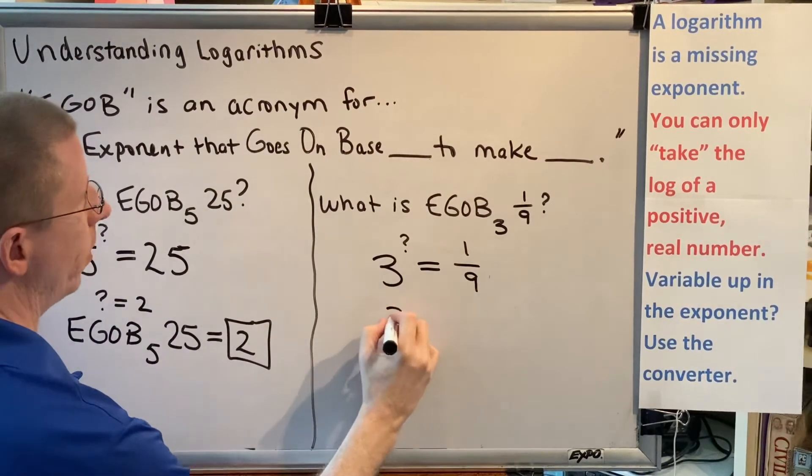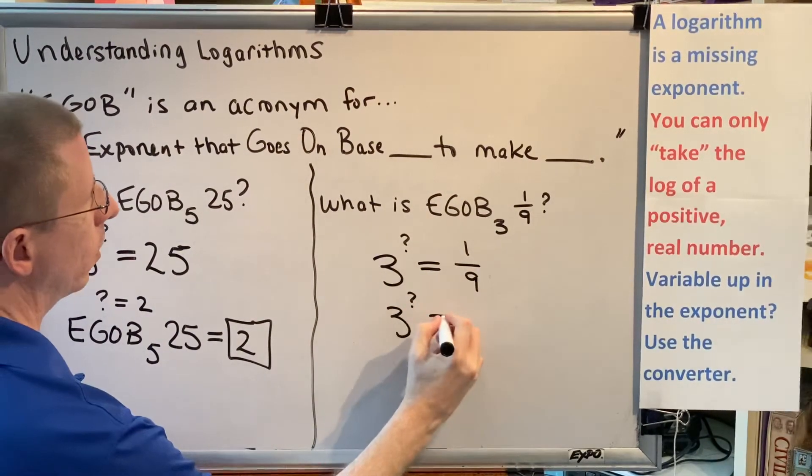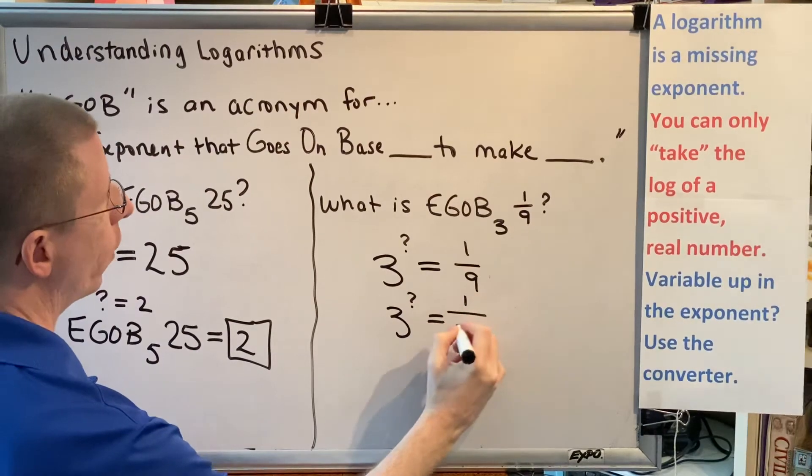Well, 9 is 3 squared, so I get 1 over 3 squared.